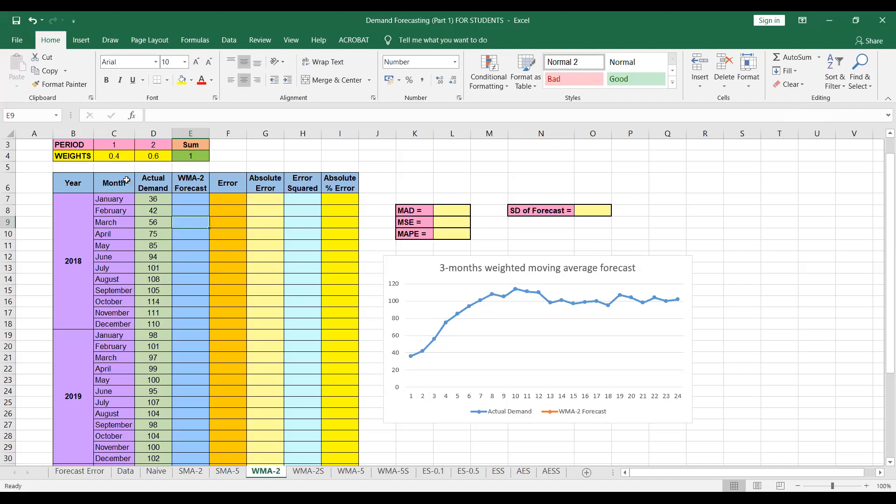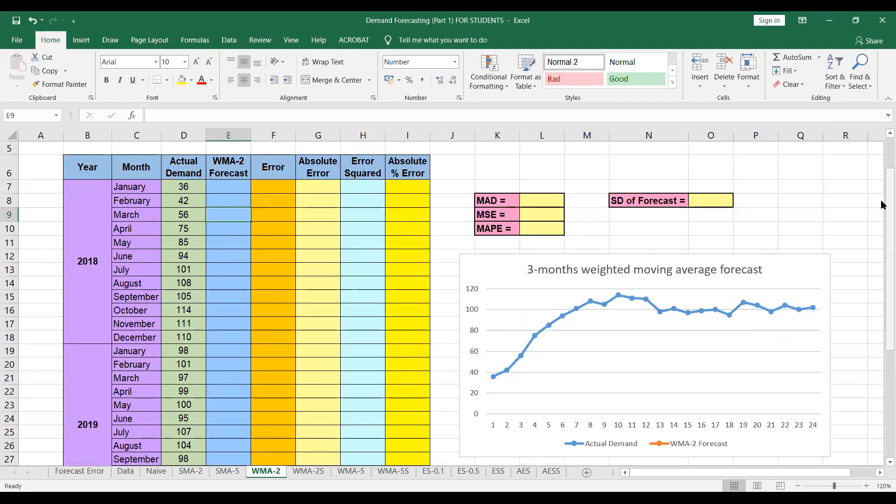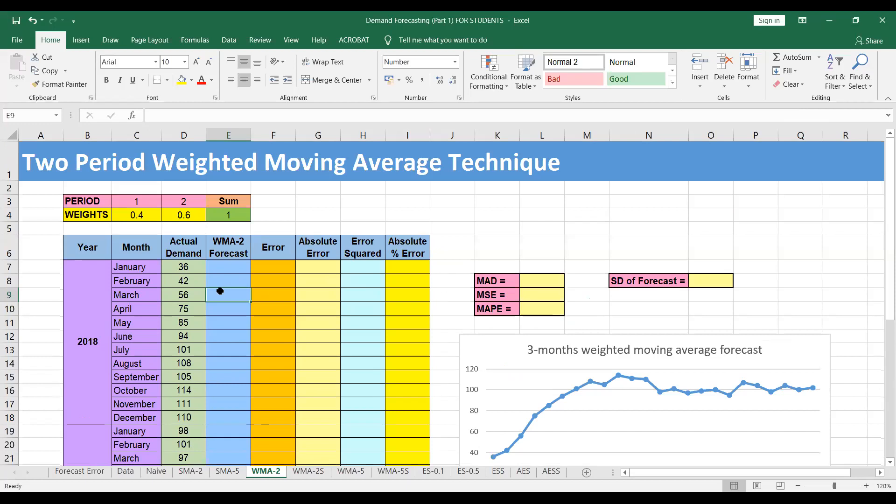So we have weights of 0.4 and 0.6, their sum should be equal to 1. So in order to find the forecast for the month of March, we have to simply multiply the weights with the corresponding period. So for March, it will be equal to 0.4 multiplied by 36 plus 0.6 multiplied by 42. So W1 into A1 plus W2 into A2. So that will be the forecast for March.